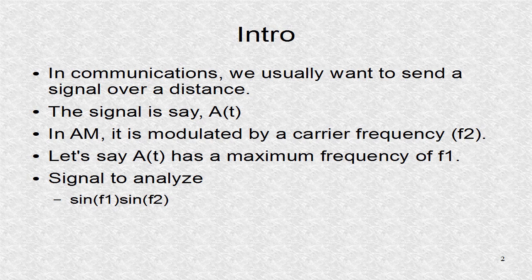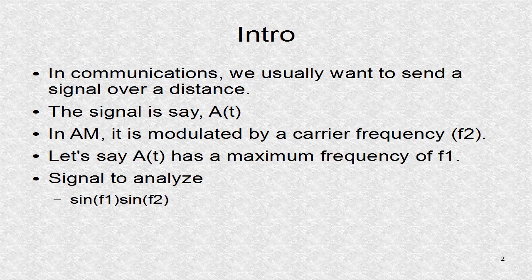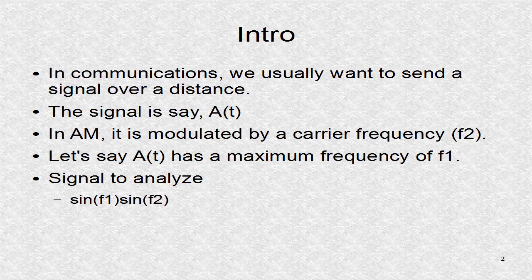Amplitude modulation is used in communications to send a signal over distances. The signal that we want to send has some maximum frequency, say F1. It will be modulated, that is, multiplied, by a frequency F2 acting as our carrier.